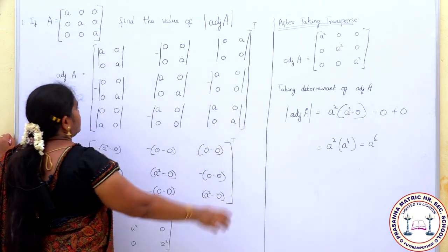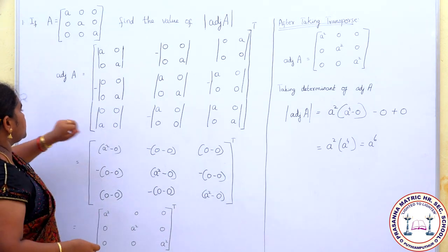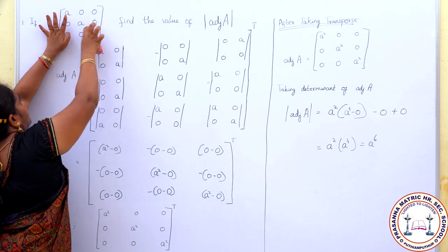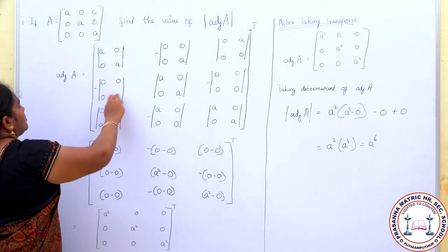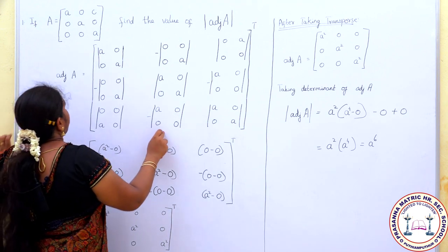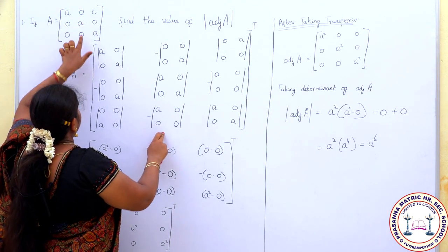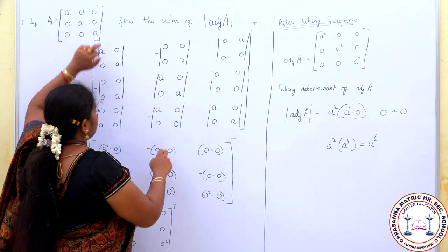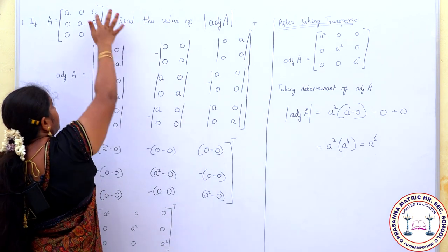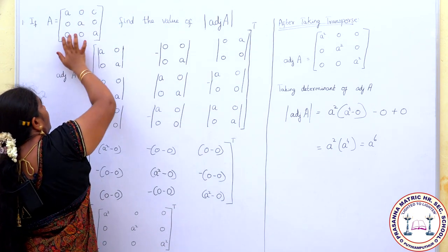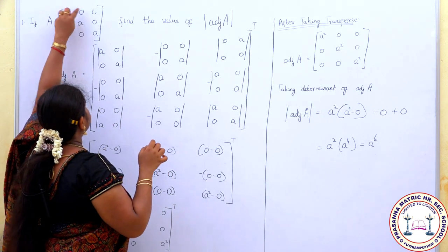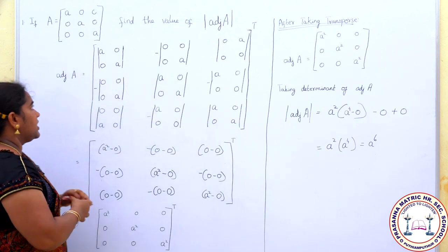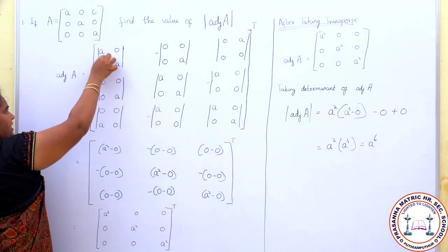For the third row cofactors: leave the first column and third row, then leave the second column and third row, and finally leave the third column and third row. Write the remaining elements in each case. These 2×2 sub-matrices are used to compute the cofactors. Multiply the leading diagonal elements.